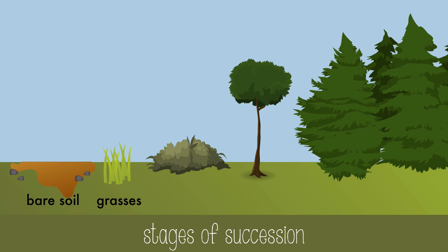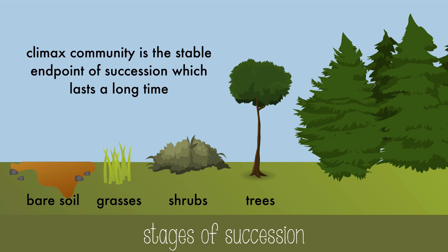Then larger shrubs, and even trees, will make their way into the area. And finally, a climax community is reached, which is the stable endpoint of succession and lasts for a long time. Climax communities are recognized by large, old trees.